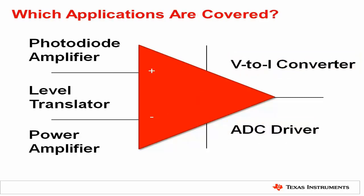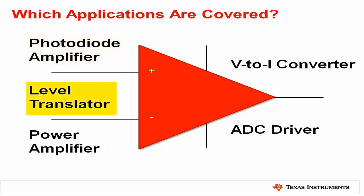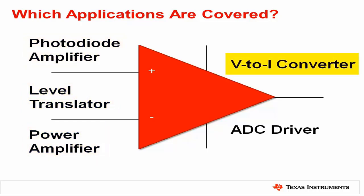In addition to the specs, we will also cover some typical applications of each type of product. In the case of an op amp, these applications may include photo diode amplifier, level translator, power amplifier, voltage to current converter, and ADC driver.